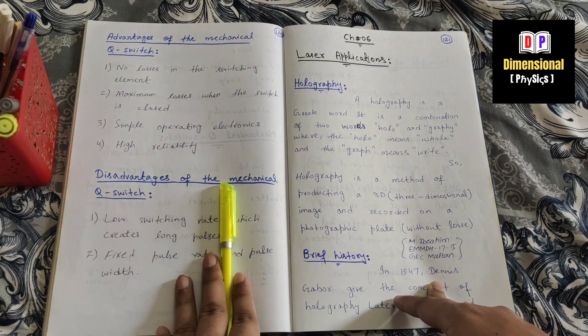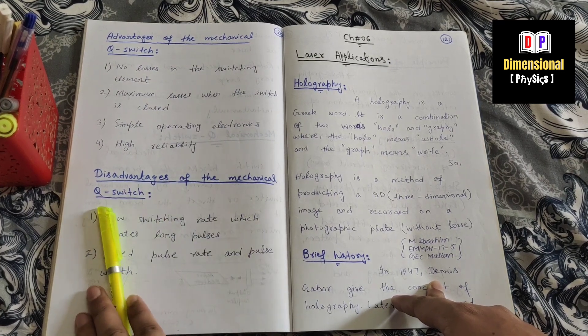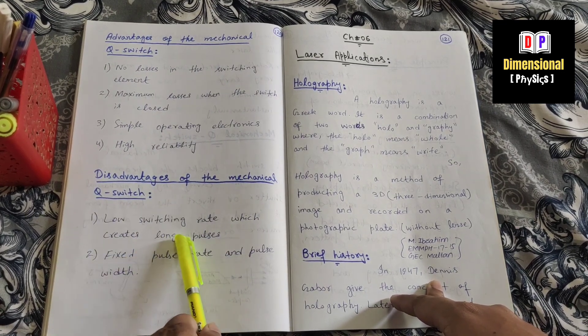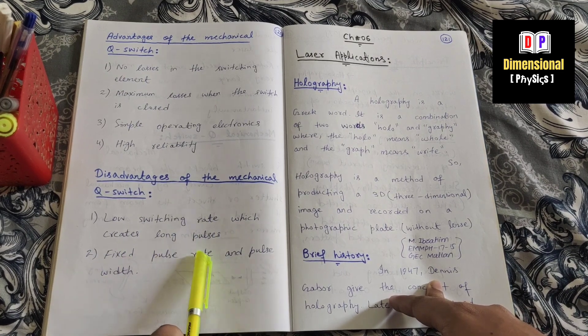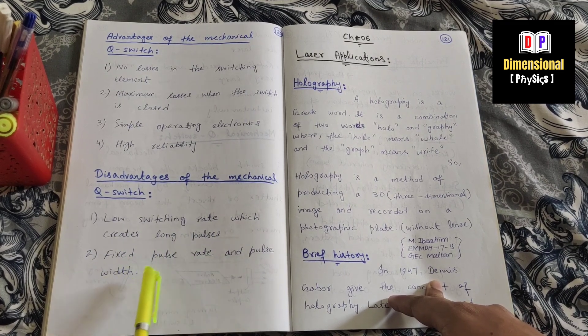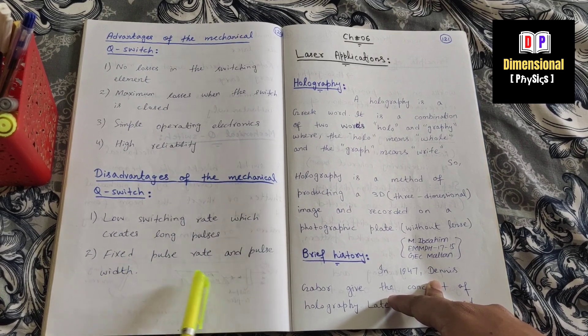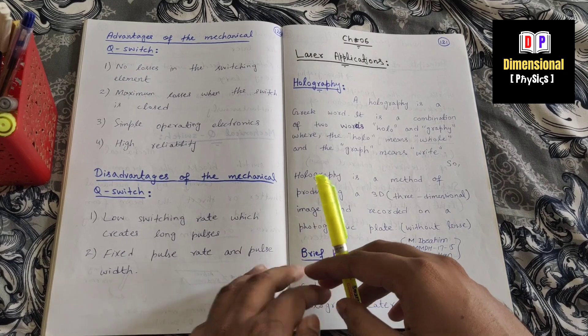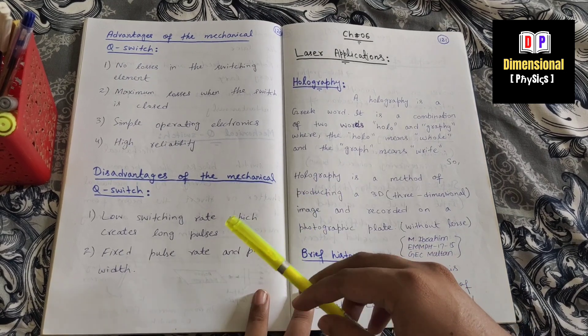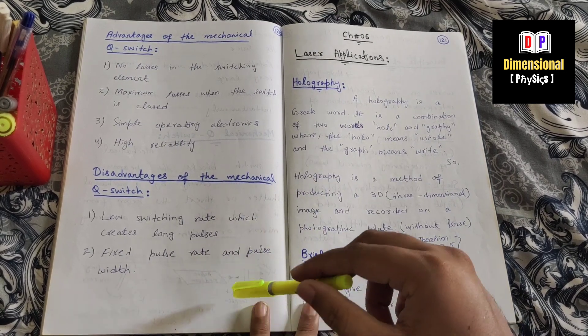Disadvantages of the mechanical Q-switch: low switching rate, which creates long pulses, and fixed pulse rate and pulse width. This concludes today's topic of discussion.